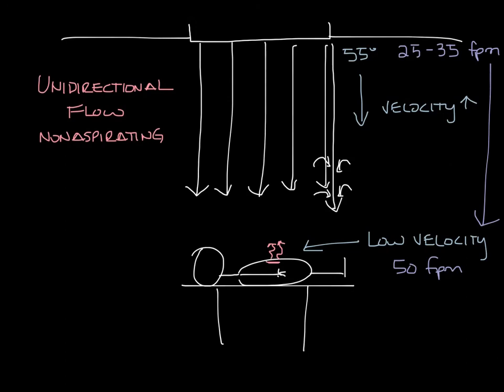So let's recap. What we know is laminar diffusers are really unidirectional flow non-aspirating diffusers. They have low velocity air that comes out in a single direction from the ceiling to the floor to wash the patient with low velocity air.